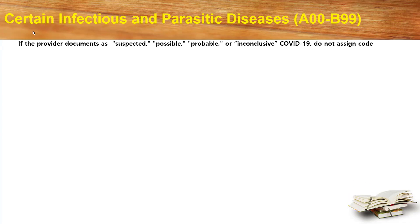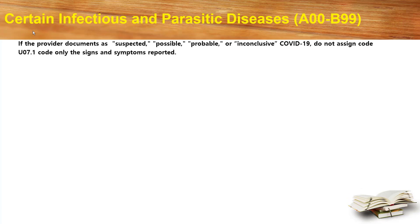If the provider documents the case as suspected, possible, probable, or inconclusive COVID-19, do not code U07.1. Code only the signs and symptoms reported.